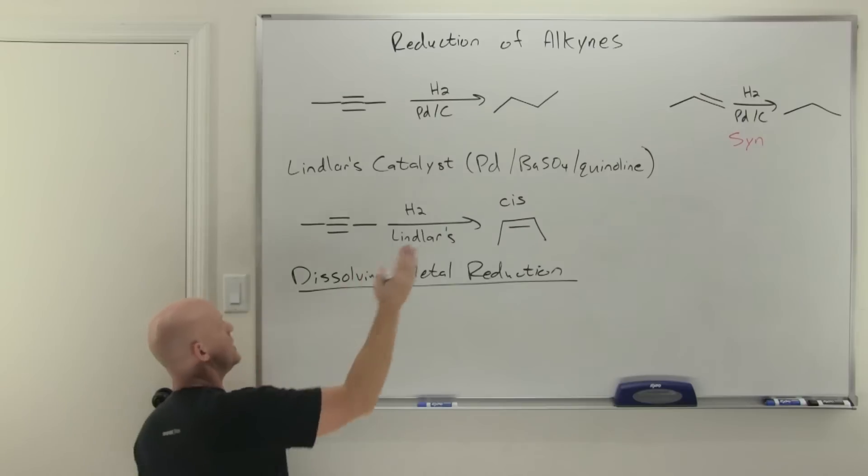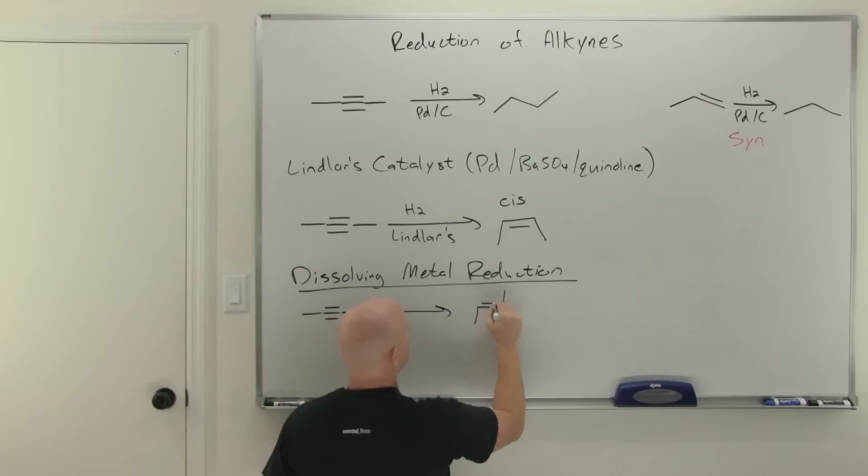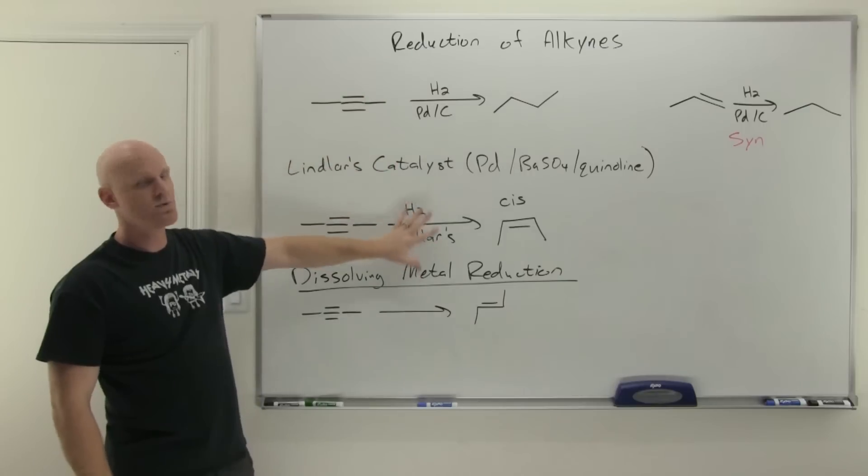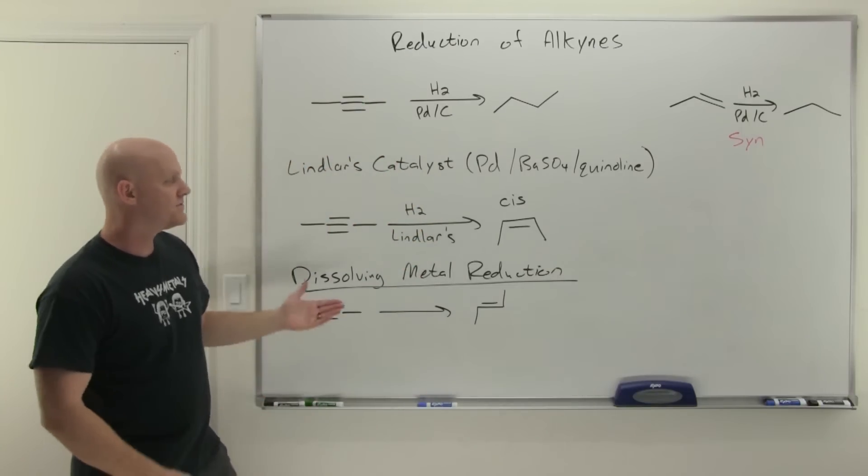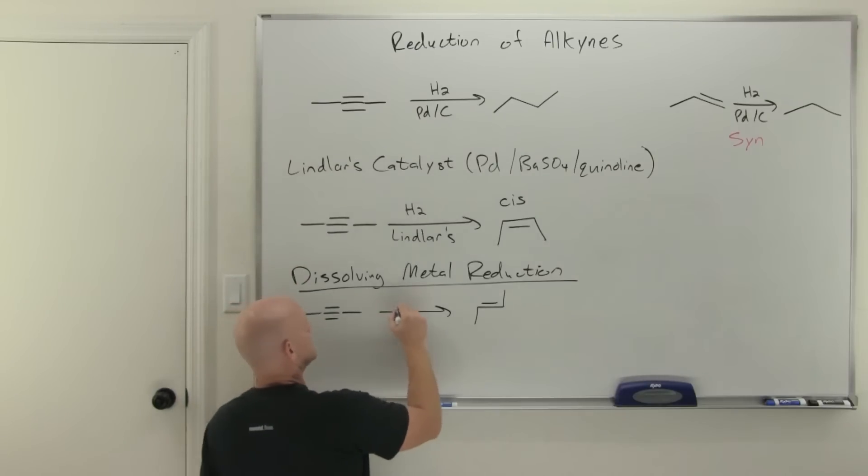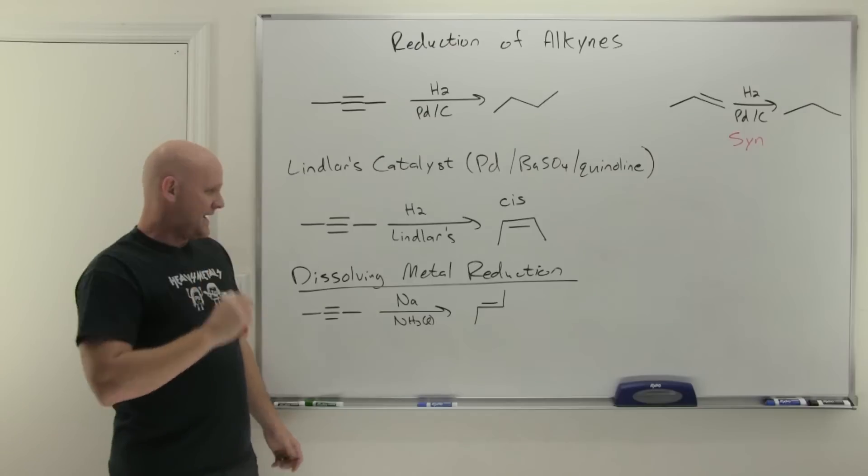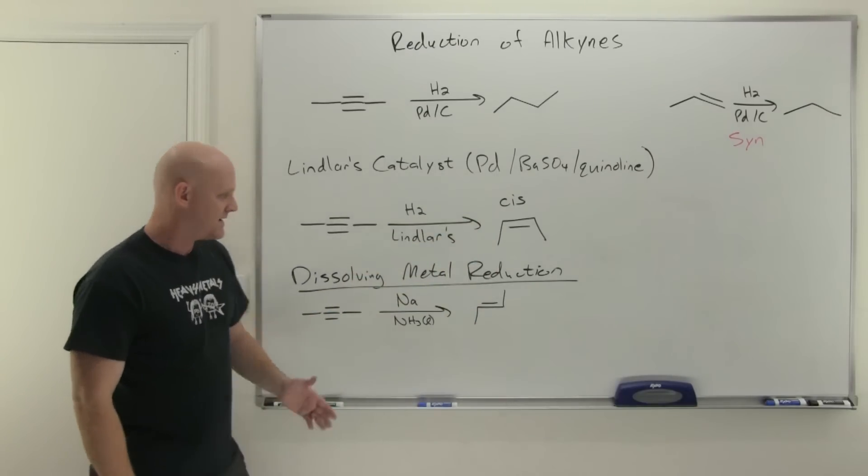Somebody said hey, we know how to make the cis alkene from the alkyne, it would be great if we could make the trans alkene as well. It turns out we can, and it is not going to be a hydrogenation reaction at all—it's not going to involve molecular hydrogen at all. It's going to involve dissolving metal. The metal we typically use is sodium, though lithium and potassium also work, and we dissolve it in a solution of liquid ammonia.